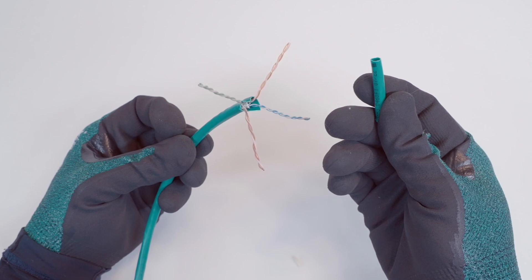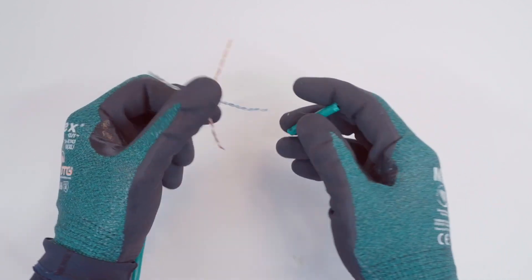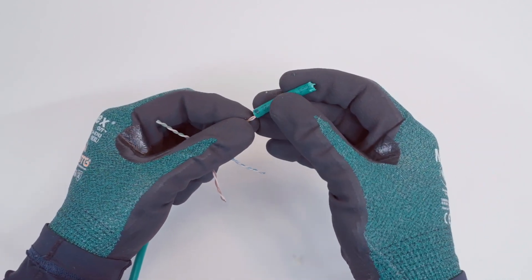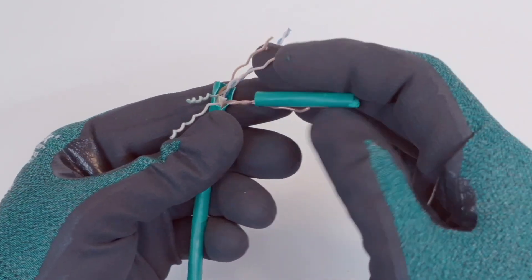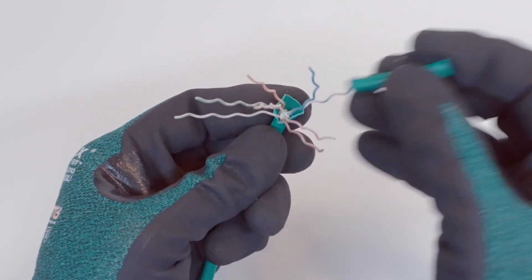Next, grab the piece of jacket that was initially removed and use it to untwist each pair until all eight wires are separated. Notice that the wires are left with a wavy pattern, which must be addressed.